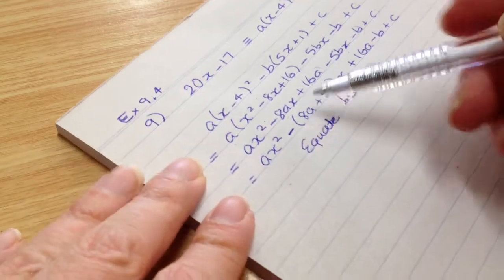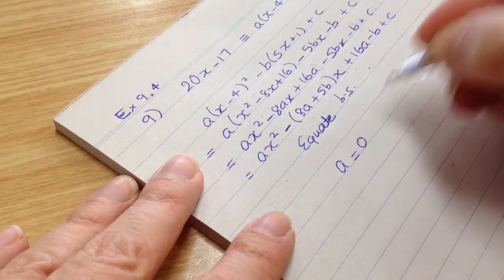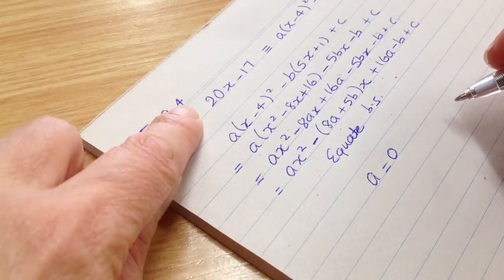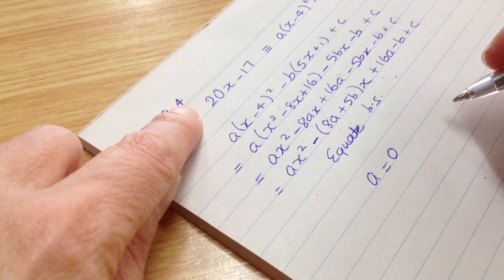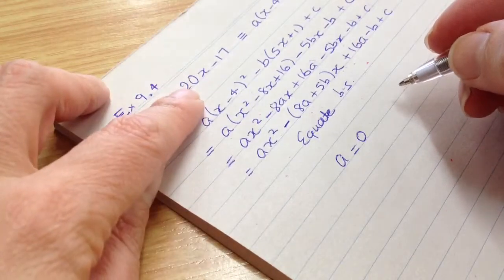So zero gets equated with a, the ax squared term. So we just simply write that a is equal to zero. There is no x squared term there. So when you equate it, a is equal to zero.